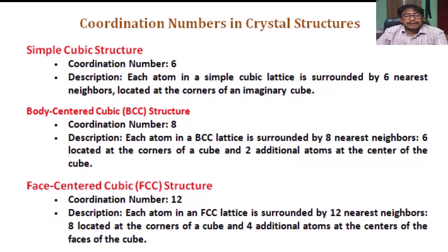Coordination Numbers in Crystal Structures — Simple Cubic Structure, Coordination Number 6. Each atom in a simple cubic lattice is surrounded by six nearest neighbors, located at the corners of an imaginary cube.